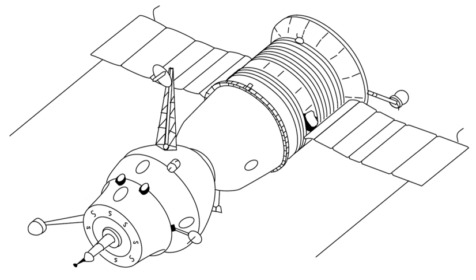Unmanned and test missions included Cosmos 133, Cosmos 140, Cosmos 186 and Cosmos 188 (the first unmanned automated docking in the history of spaceflight), Cosmos 212 and Cosmos 213 (unmanned automated docking mission), Cosmos 238, and Soyuz 2, the intended docking target for the manned Soyuz 3.